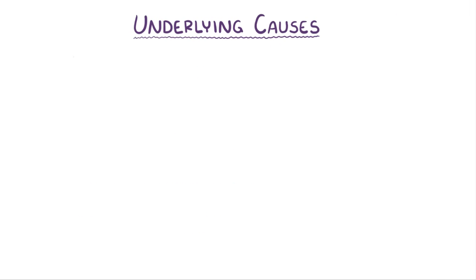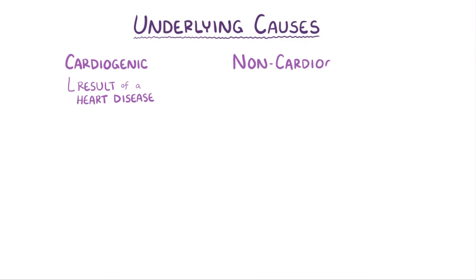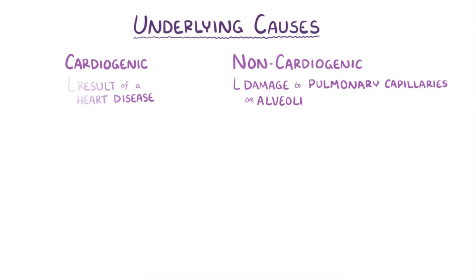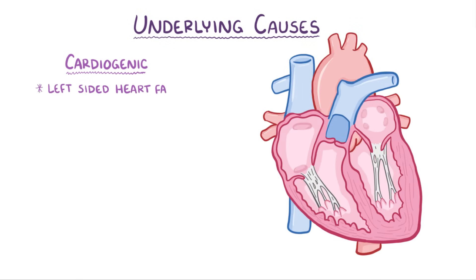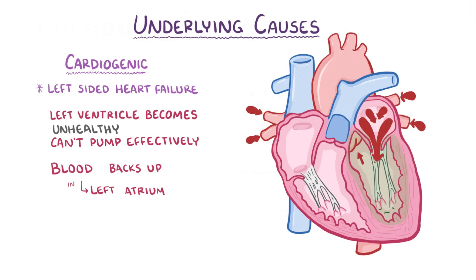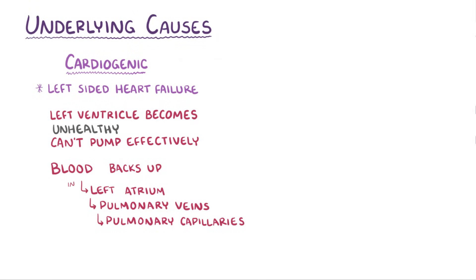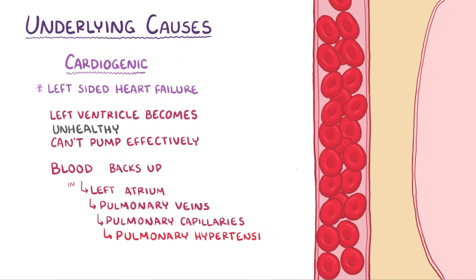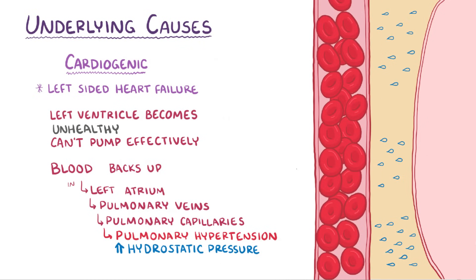The underlying cause of pulmonary edema can be cardiogenic, meaning that it develops as a result of a heart disease, or it could be non-cardiogenic, which typically involves damage to the pulmonary capillaries or alveoli. The most common cardiogenic cause is left-sided heart failure, where the left ventricle becomes unhealthy and can't pump effectively, which means that blood starts to back up into the left atrium, and then the pulmonary veins and pulmonary capillaries. The extra blood in the pulmonary capillaries causes pulmonary hypertension, which is an increase in the hydrostatic pressure of the pulmonary blood vessels, and this pushes more fluid into the interstitial space of the lungs, leading to pulmonary edema.